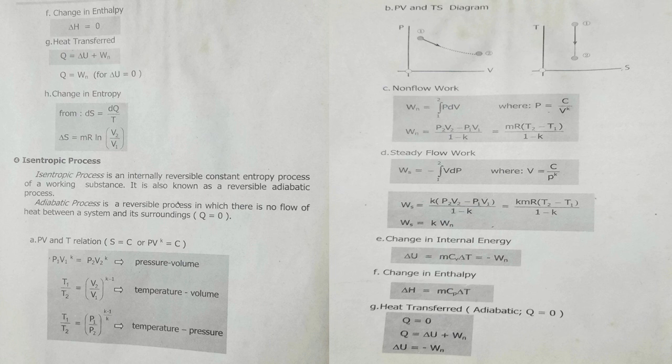For the pressure-volume relation: P1 times V1 raised to K equals P2 times V2 raised to K. For the temperature-volume relation: T1 over T2 equals quantity V2 over V1 raised to K minus 1. For the temperature-pressure relation: T1 over T2 equals P1 over P2 raised to quantity K minus 1 over K.